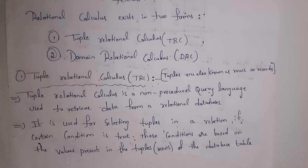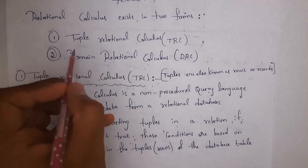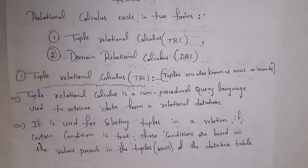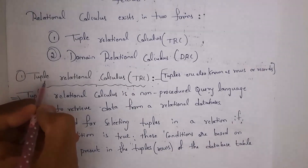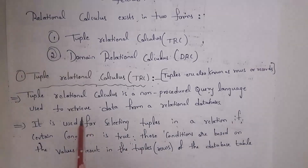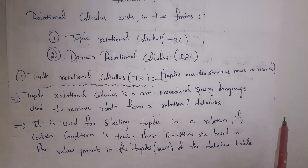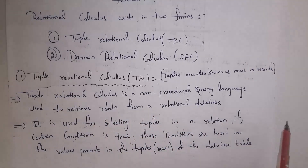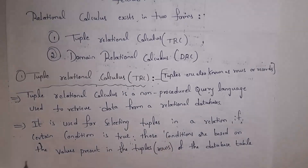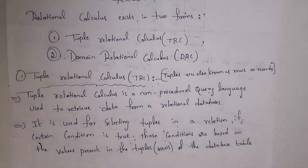There are two forms of relational calculus: tuple relational calculus and domain relational calculus. Tuple is nothing but a row, or we also call a tuple a record. Tuple relational calculus is a non-procedural query language used to retrieve data from relational databases. It is used for selecting tuples in a relation if a certain condition is true, and these conditions are based on values present in rows of a database table.